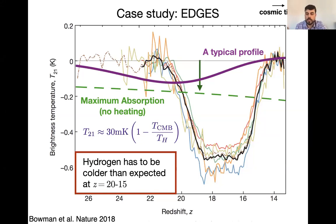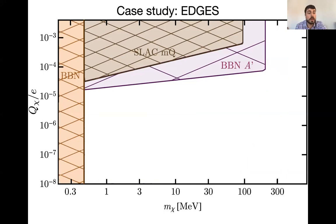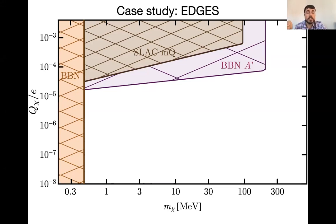What we found is that the way of explaining the EDGES signal that seems to work is by having hydrogen cooled down by millicharged dark matter — dark matter with a tiny electric charge. This is the parameter space for millicharged dark matter: y-axis is charge in units of the electron charge, x-axis is mass in MeV. The brown bounds come from the millicharged experiment — an accelerator and the most robust of all these bounds. The orange and purple come from Big Bang Nucleosynthesis: if the particle is very light, it changes the helium abundance in the early universe.